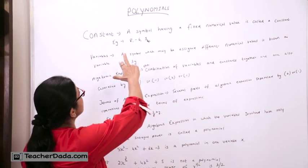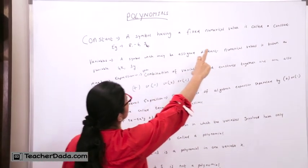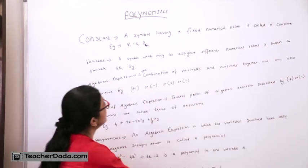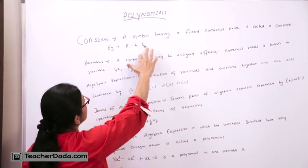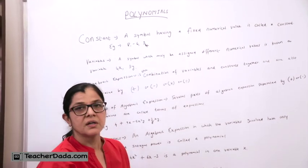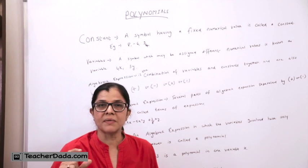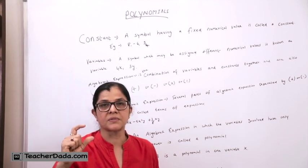First is constant. A symbol having a fixed numerical value is constant. For example, 8, -6, 5.4. In other words, these terms are constant means only the numbers, the terms and not the variable.